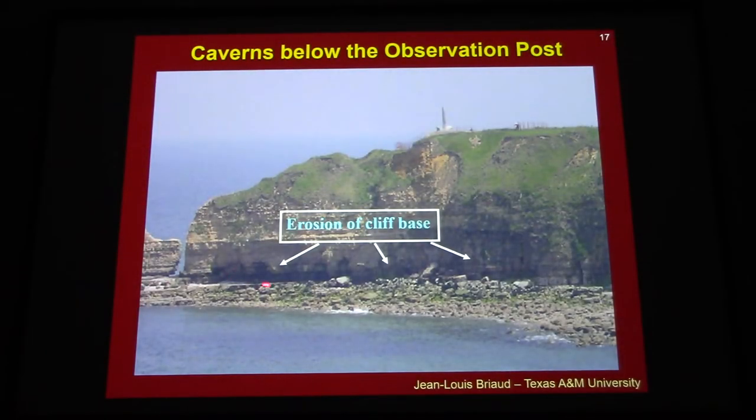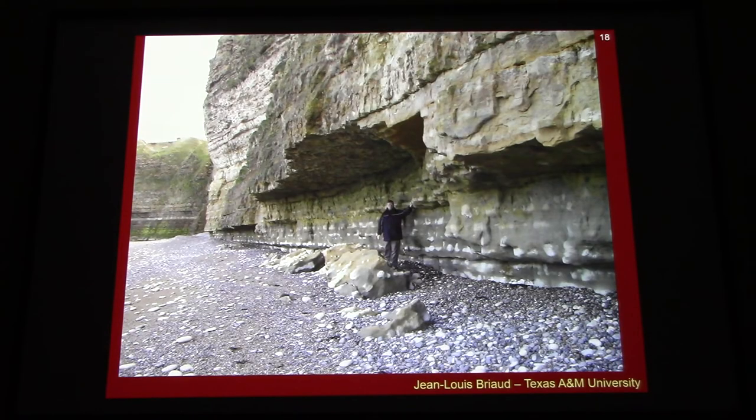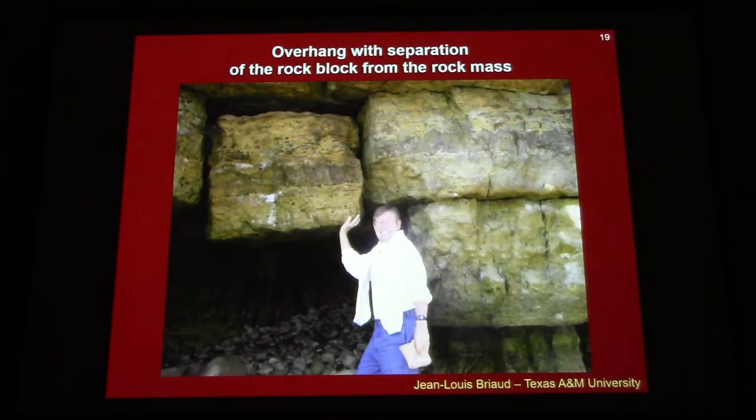And you can see here the caverns at the bottom of the observation post on the other side of the point. Here is some more cavern. And I'm standing here. Not a very good idea to stand underneath this. But that's for scale. And you can see that at the bottom of the cliffs, there are big elements of rocks. The rock is being cracked by the movement of the earth's crust. And the fissures are then cleaned up by the water. And then these blocks can be more easily moved when there is a big storm at high tide.